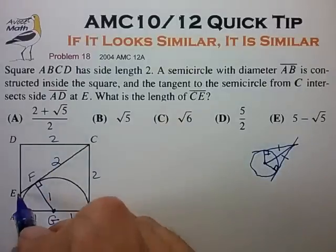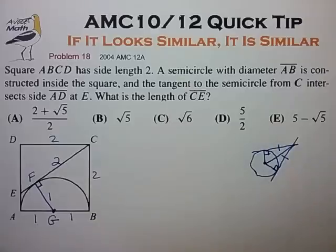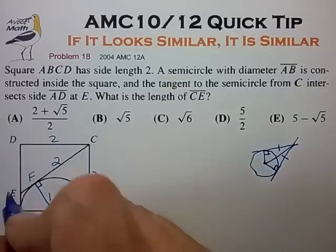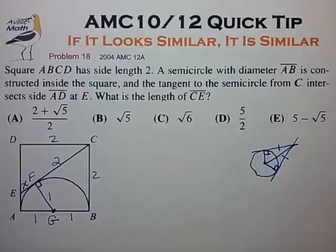It appears that finding the length EF is the critical key to solving for the length of CE. So let's just call EF X for the time being.